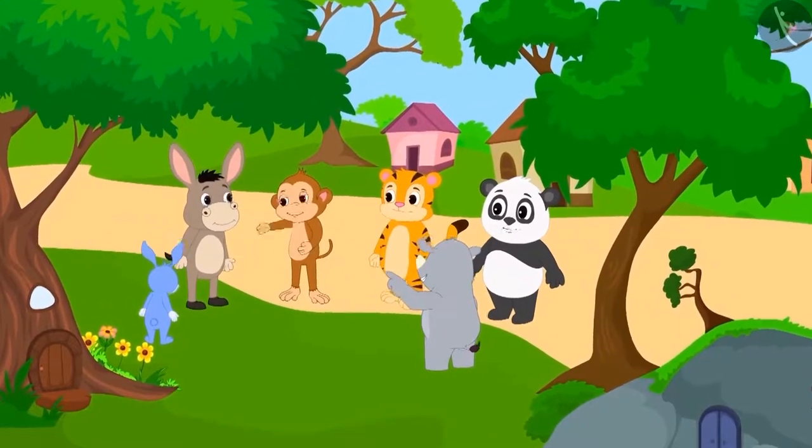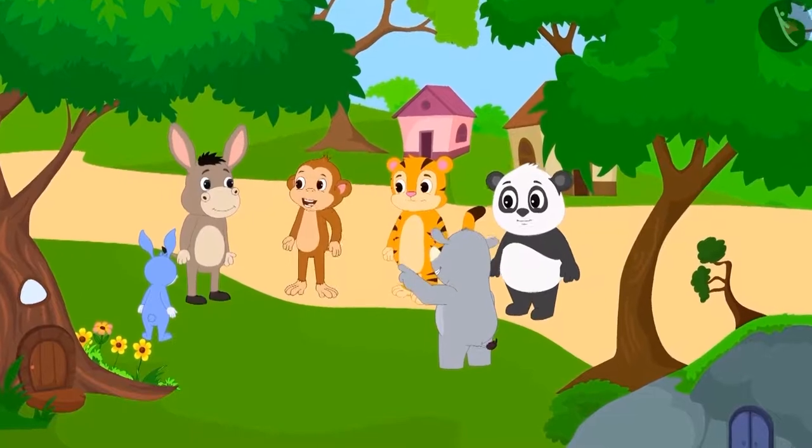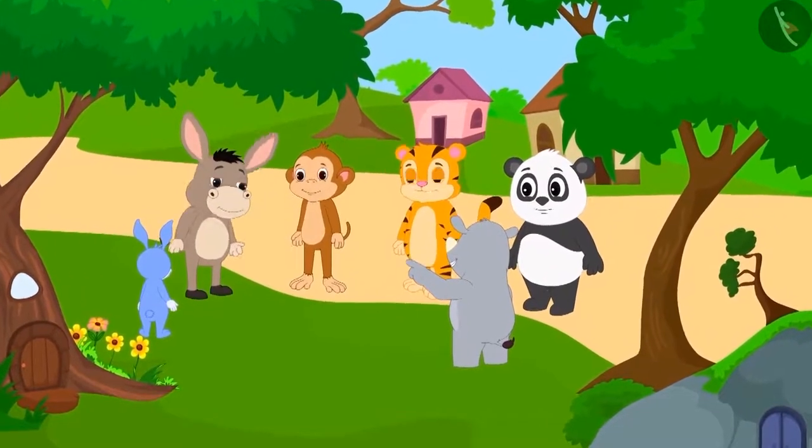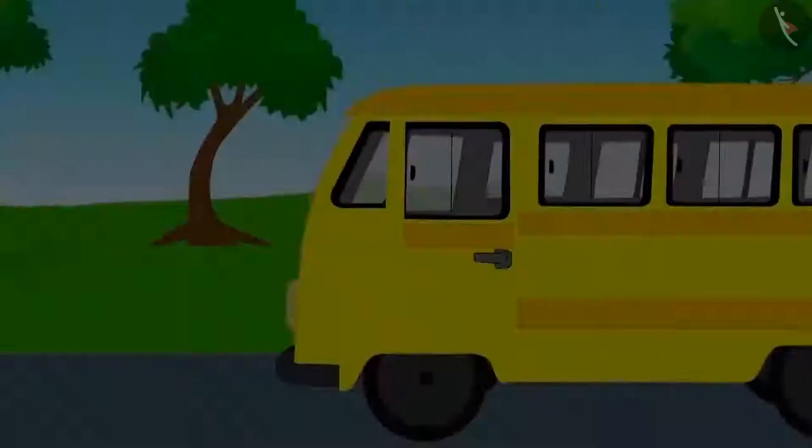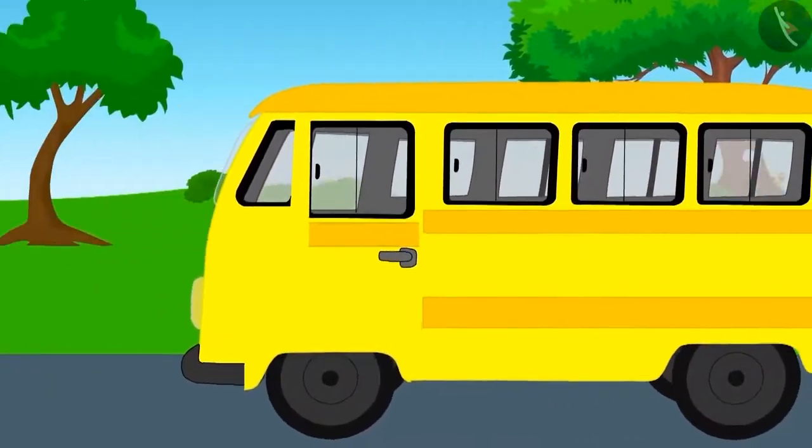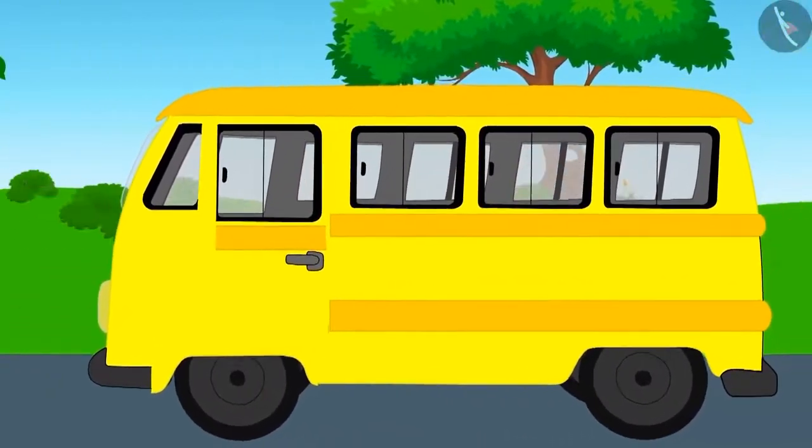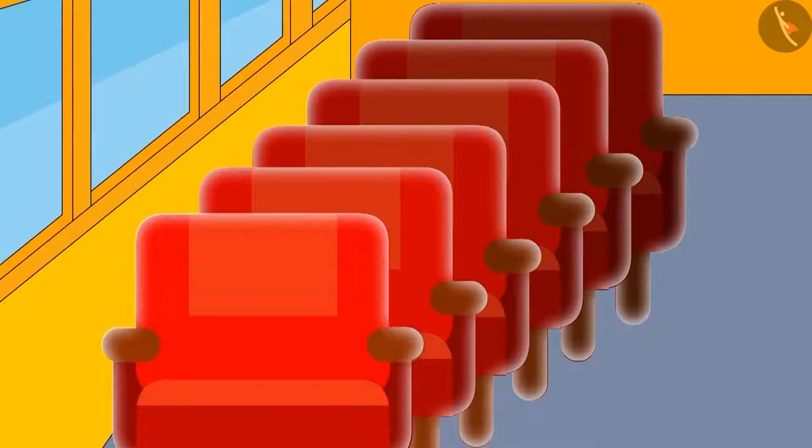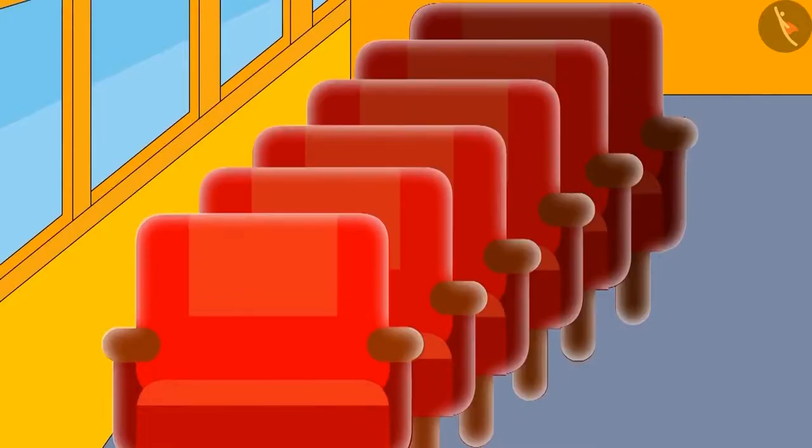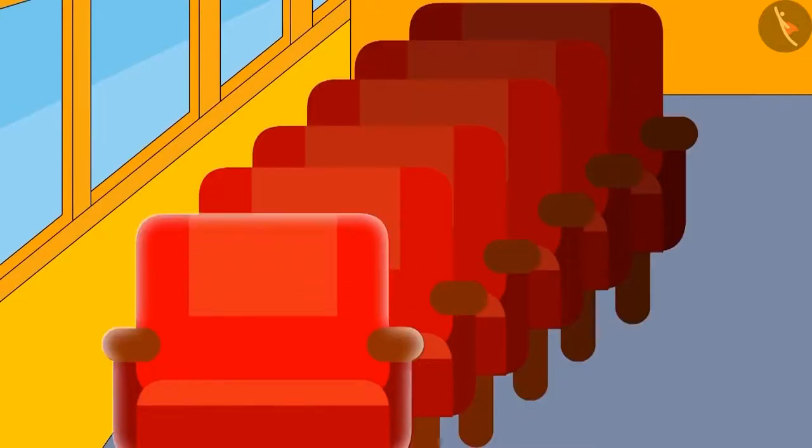The seating should be such that the number of people sitting in every row is equal. The first bus operators sent a bus in which only one person can sit in a row, and there are six such rows. Can people sit in a bus like this?